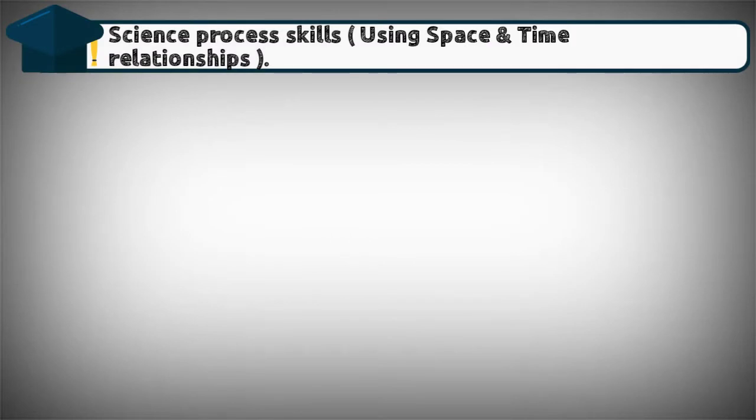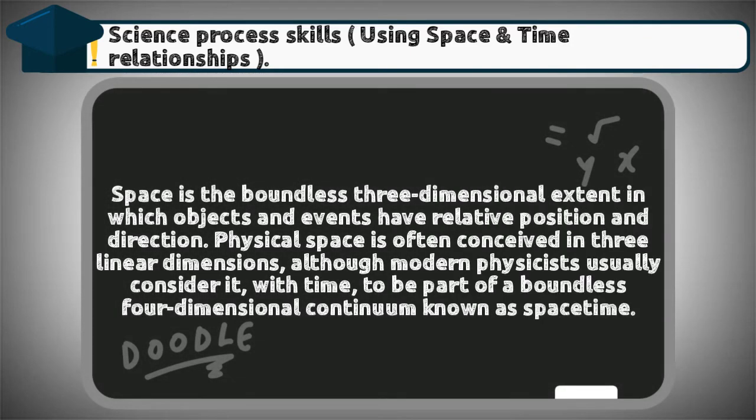Science process skills: using space and time relationships. What is space? Space is the boundless three-dimensional extent in which objects and events have relative position and direction. Physical space is often conceived in three linear dimensions, although modern physicists usually